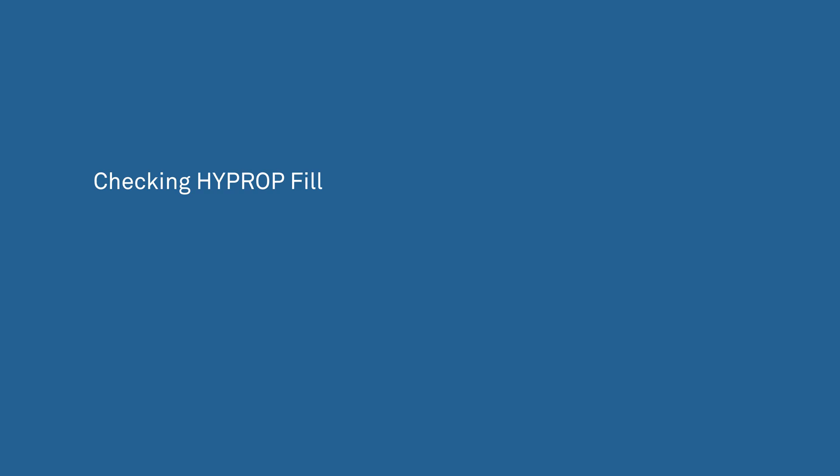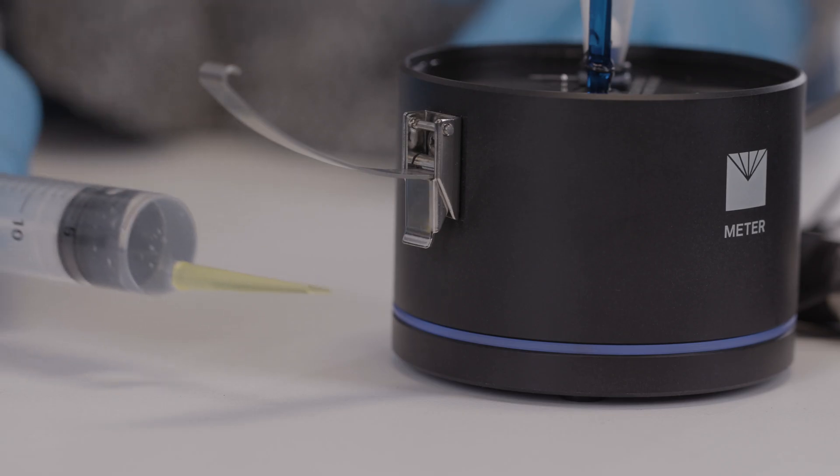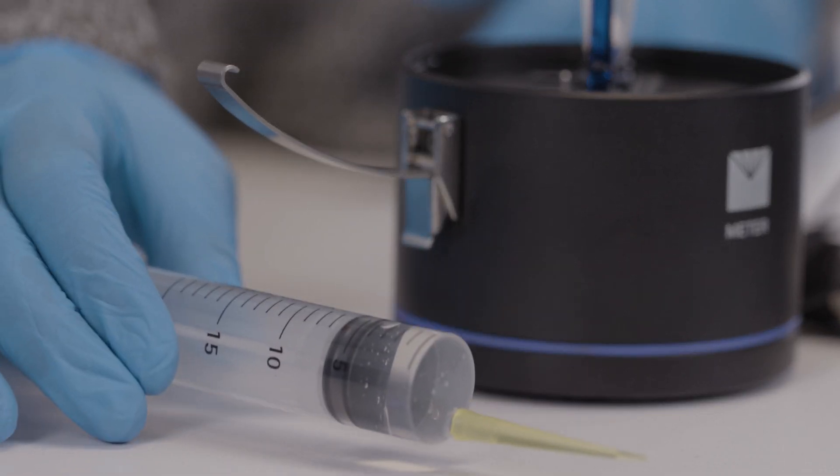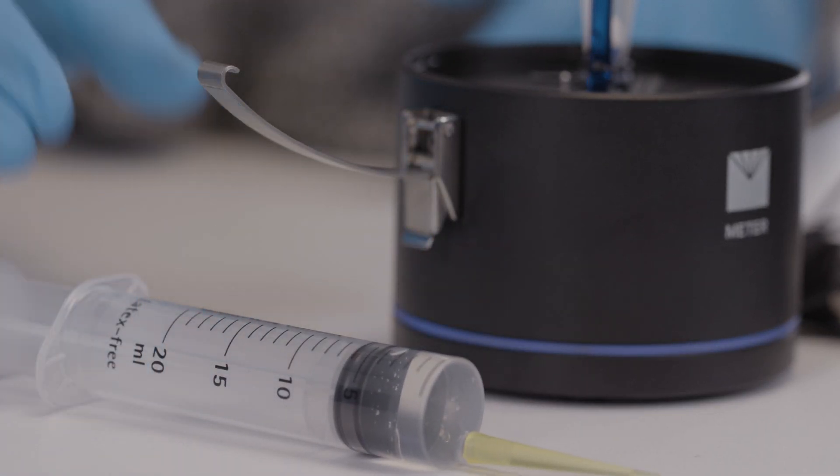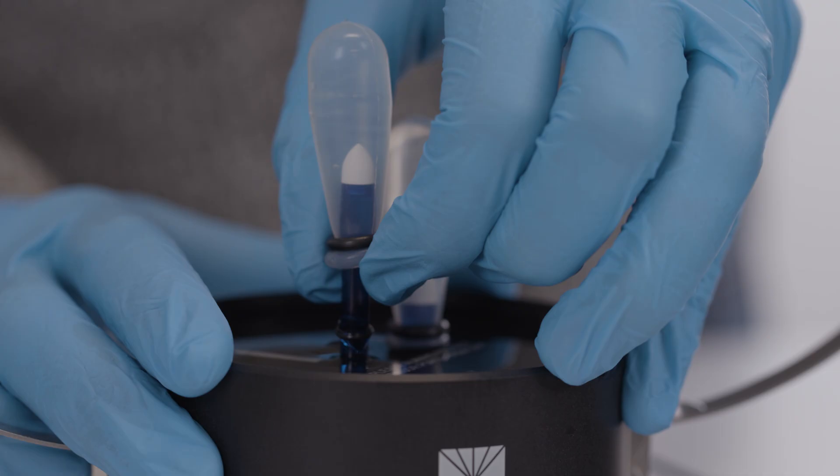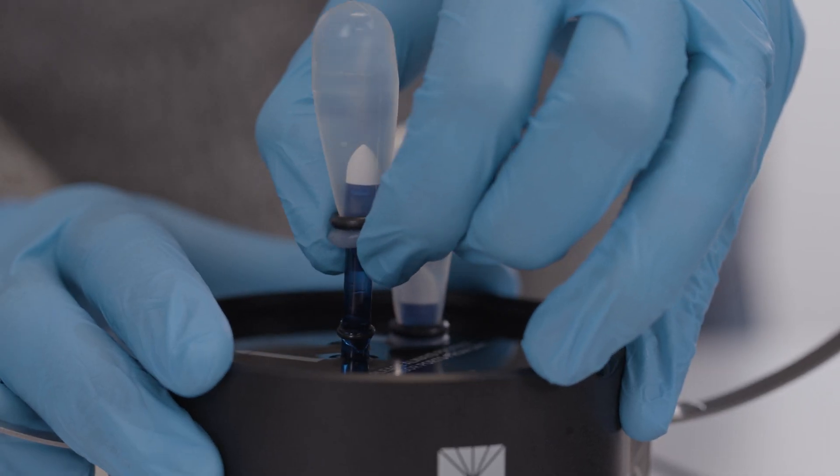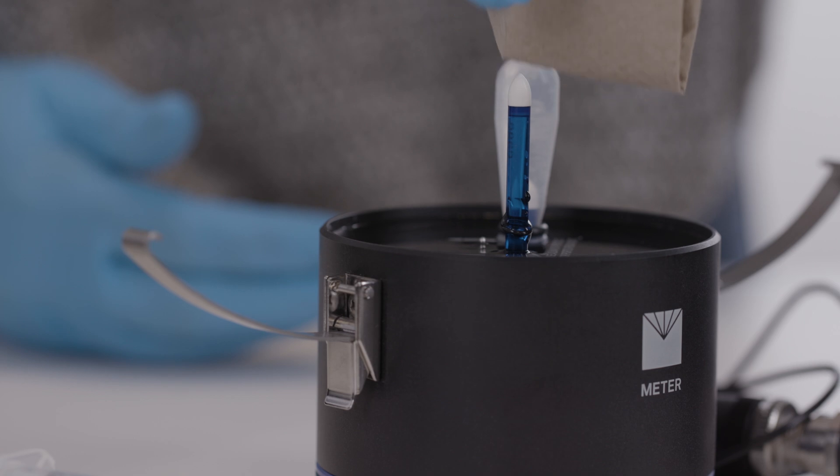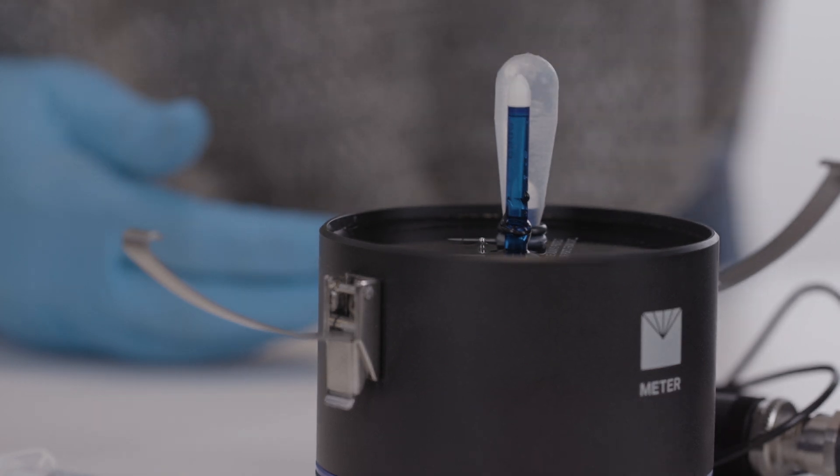The next step is to check the HyProp fill. To check the response speed, keep a syringe filled with deionized water on hand. Remove the silicone cap from the long tensio shaft and dry the ceramic tip with a paper towel. Use a paper towel and fan air over the ceramic.